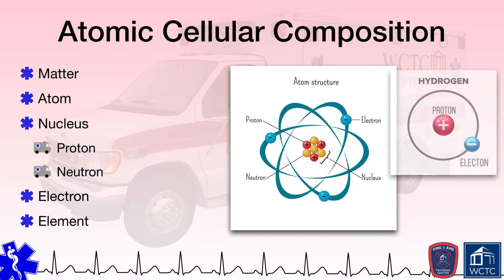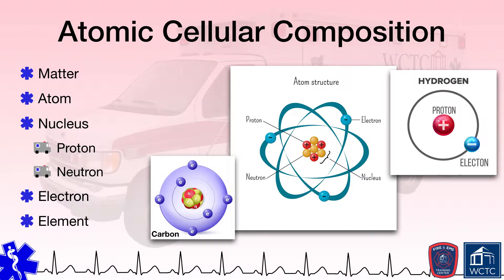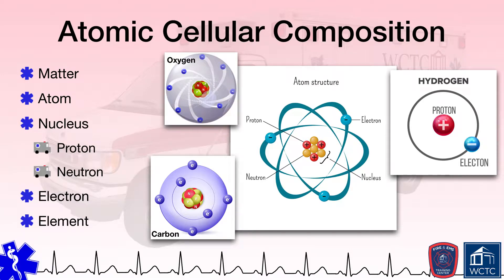The simplest atom, hydrogen, contains one proton, no neutrons, and one electron. As you add protons to an atom, it becomes a different element. A carbon atom has six protons. An oxygen atom has eight protons. Adding or removing a neutron to an atom does not change the nature of the atom itself — it remains the same element. Rather, adding or removing a neutron makes the atom heavier or lighter, respectively, and creates what is known as an isotope of that atom.